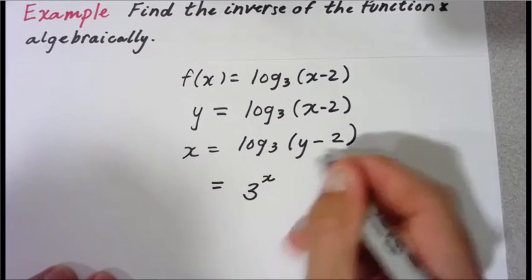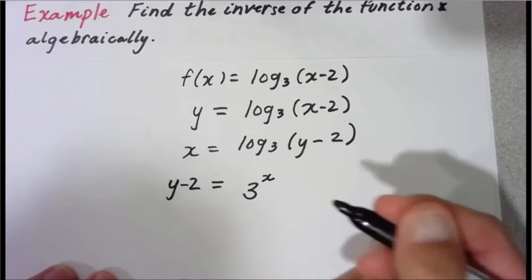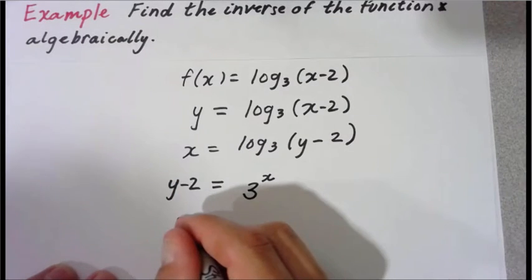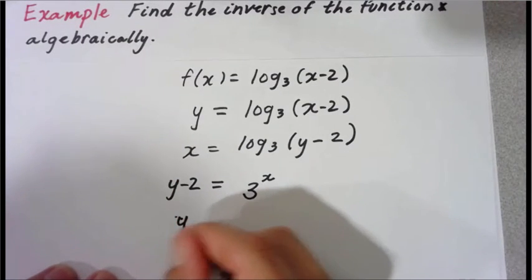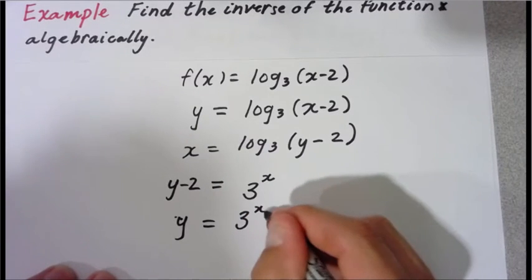And then that's equal to what's left, y minus two. So to solve for y, I add two to both sides. So I have y equals three to the x plus two.